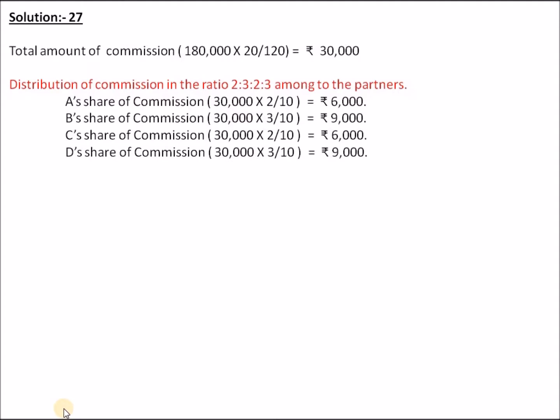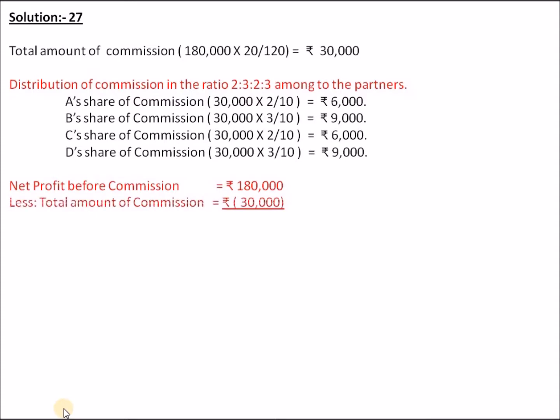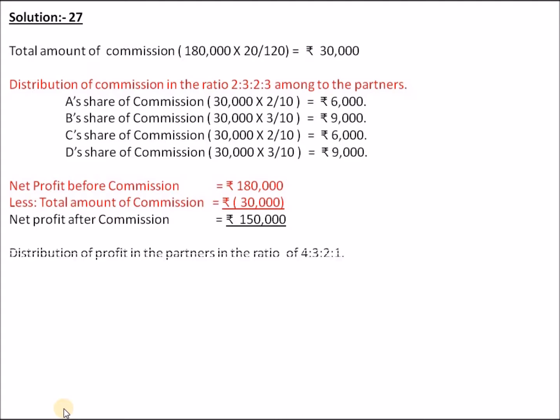After distributing the commission, the net profit before commission is Rs. 1,80,000. Less total commission of Rs. 30,000. Net profit after commission is Rs. 1,50,000.